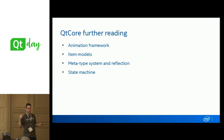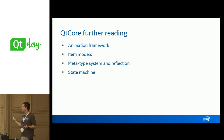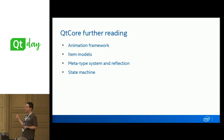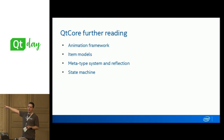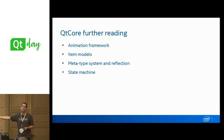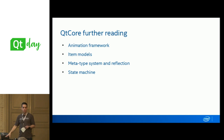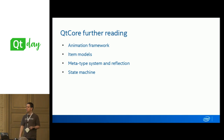Other things in Qt Core I didn't cover: the animation framework and state machine — expected to move out in Qt 6 — and item models, which are non-graphical even though you use them with item views. And of course the meta-type system, meta-object and reflection, which enables MOC, QtDBus, and many other interesting things.